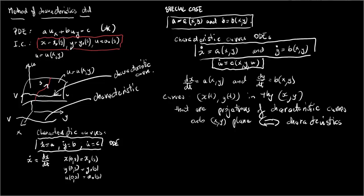So in the special case where functions A and B do not depend on U, the first two equations for the characteristic curves just give equations for characteristics. Actually, by applying chain rule and using the first two equations for characteristic curves, we see that the curves Y are the function of X and perhaps parameter S.